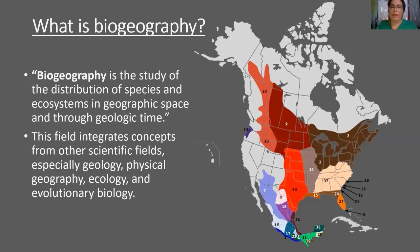Biogeography basically studies a wide variety of aspects, but it's primarily related to geographic distributions of species and ecosystems. It's a very integrative field that uses concepts from a lot of different fields — especially for plants — like geology, physical geography, ecology, and sometimes evolutionary biology, depending on what scientists are researching.